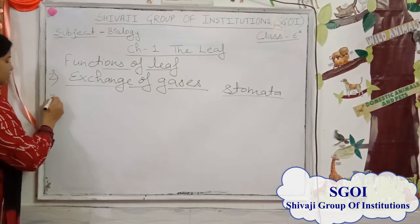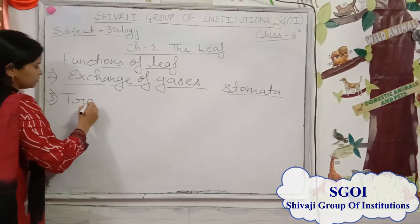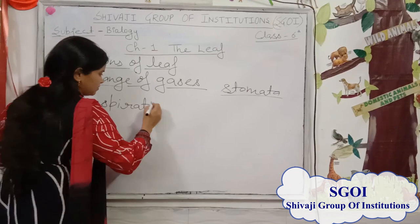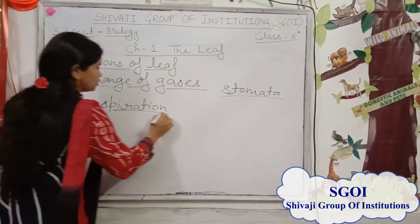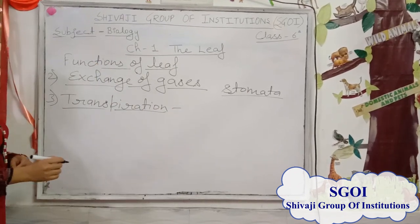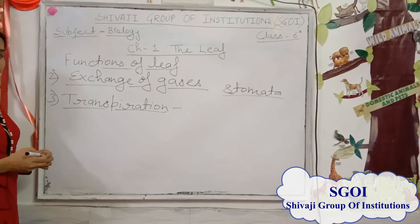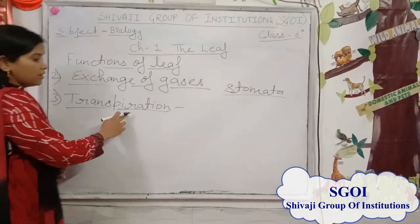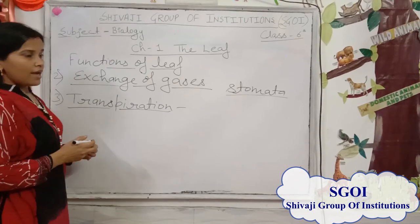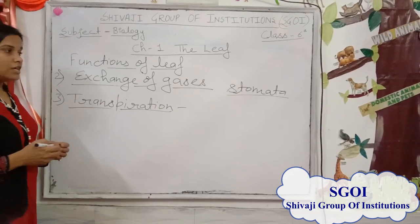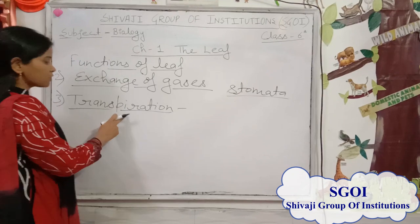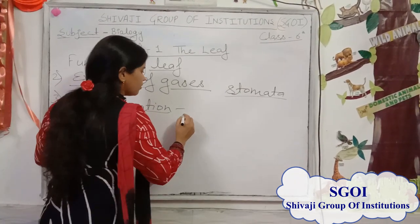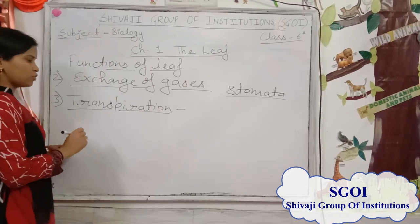The next function is transpiration. Transpiration is the process of loss of water in the form of water vapour through the stomata. The excess water is lost through the stomata, and this process is called transpiration. It occurs through the stomata of the leaf.